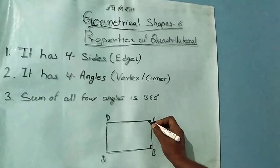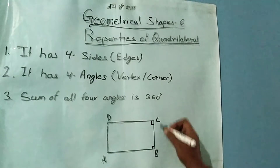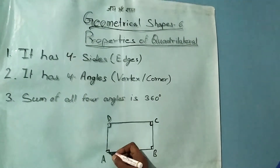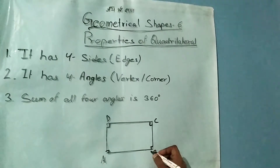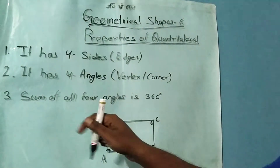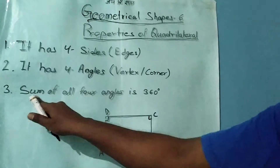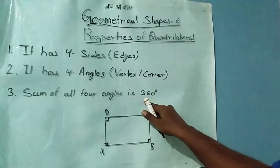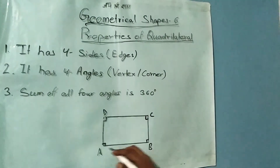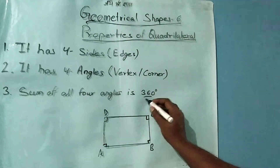The second property is it has four angles. Since there are four sides, there will be four angles also: angle A, angle B, angle C, and angle D. The next and most important property of a quadrilateral is that the sum of all four angles is 360 degrees — angle A plus angle B plus angle C plus angle D equals 360 degrees.